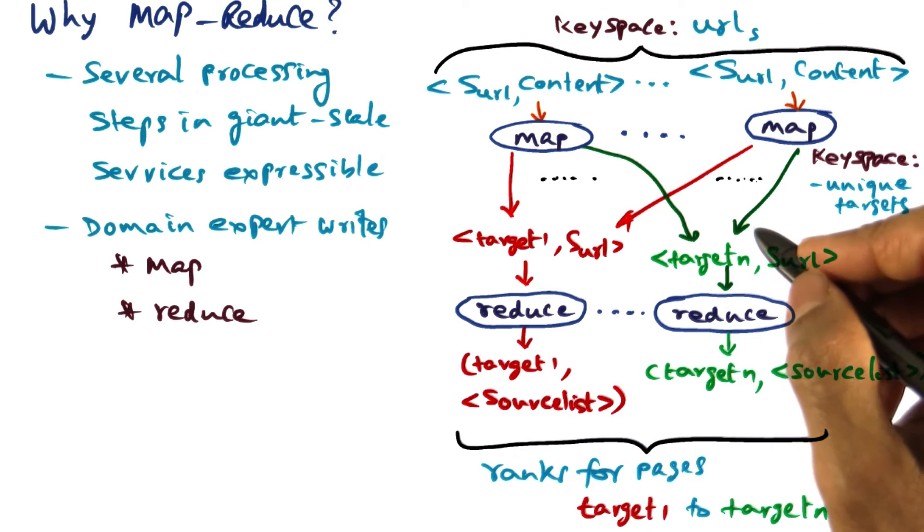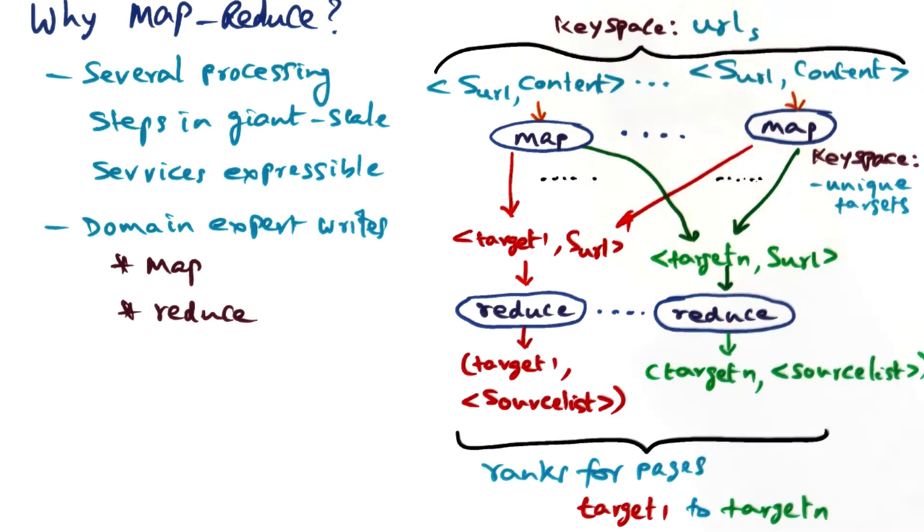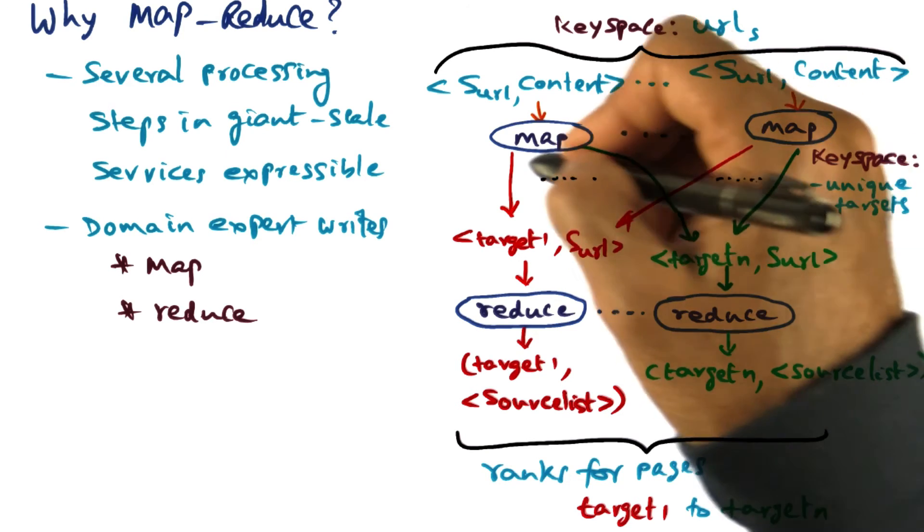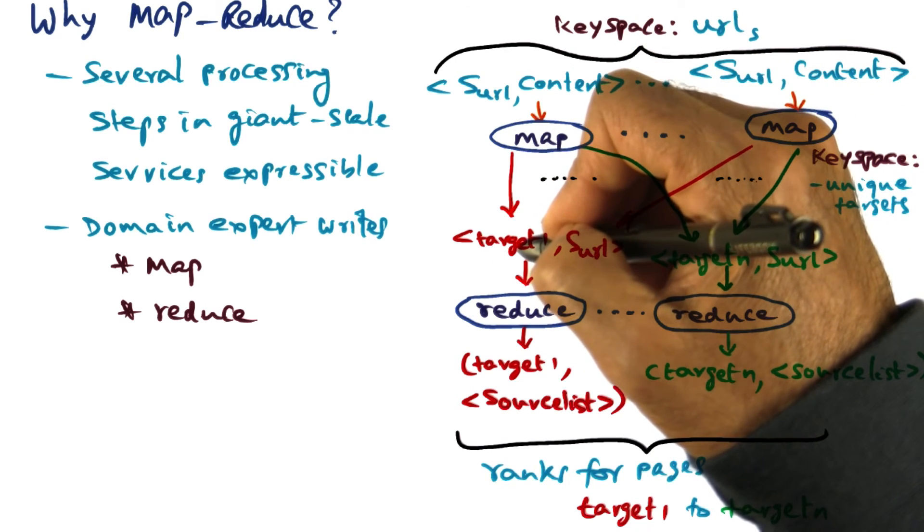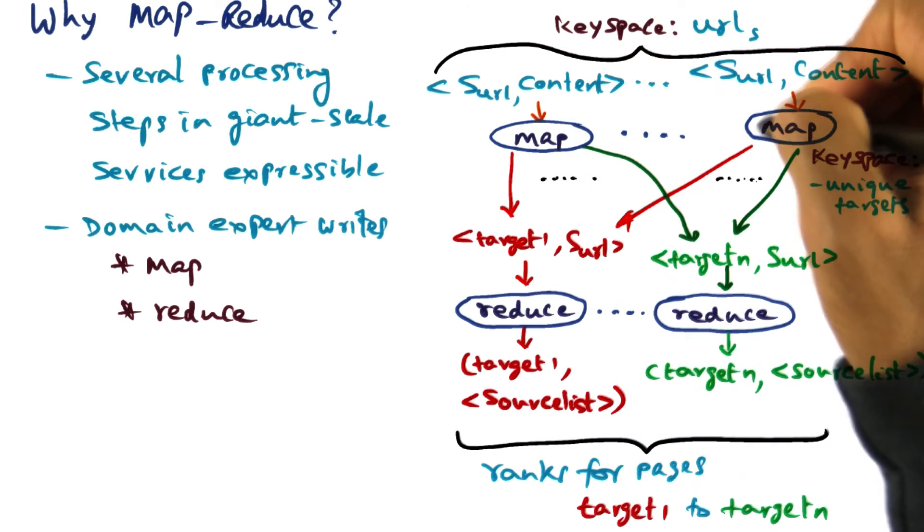For instance, if I wanted to find out how many times my web page appears in the universe of web pages all over the world, we can take the entire corpus of web pages available in the universe as input, and the mappers are going to look for occurrence of my web page in each one of those input web pages.